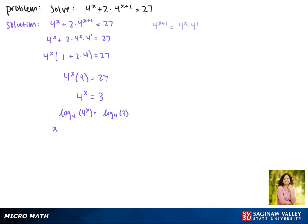The log base 4 of 4 to the x can be written as x times the log base 4 of 4, and the log base 4 of 4 is equal to 1, so this gives us x equals the log base 4 of 3 and this is our solution.